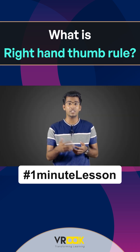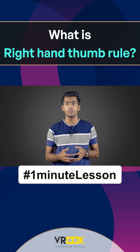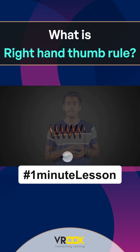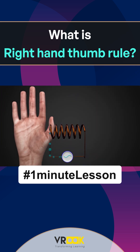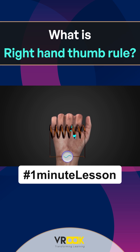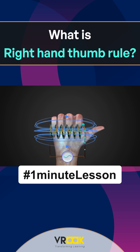It can be the reverse case too. Suppose you have a coil and the current is flowing through it. If you bend your right hand fingers in the direction of the current, then your thumb will point in the direction of the magnetic field.